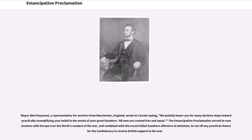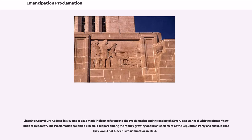Mayor Abel Haywood, a representative for workers from Manchester, England, wrote to Lincoln saying: 'We joyfully honor you for many decisive steps toward practically exemplifying your belief in the words of your great founders, All men are created free and equal.' The Emancipation Proclamation served to ease tensions with Europe over the North's conduct of the war, and combined with the recent failed Southern offensive at Antietam, to cut off any practical chance for the Confederacy to receive British support in the war. Lincoln's Gettysburg Address in November 1863 made indirect reference to the proclamation and the ending of slavery as a war goal with the phrase 'new birth of freedom.'